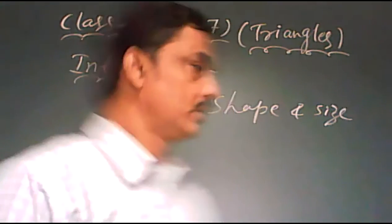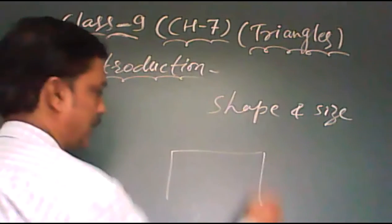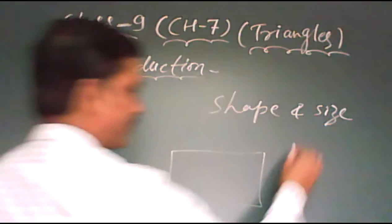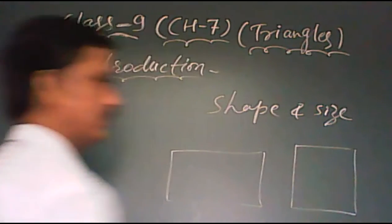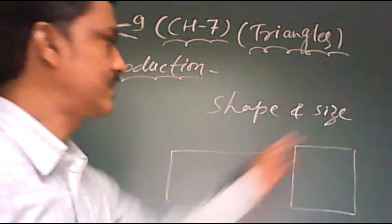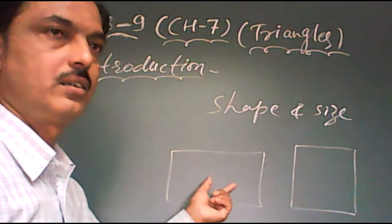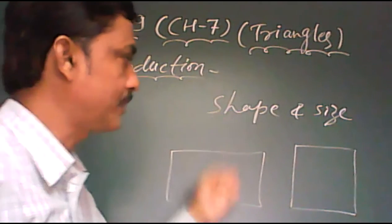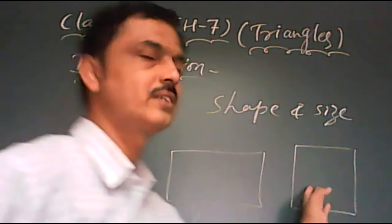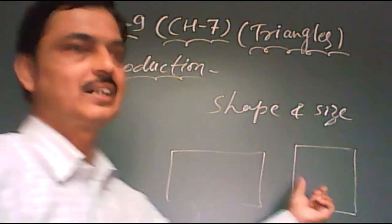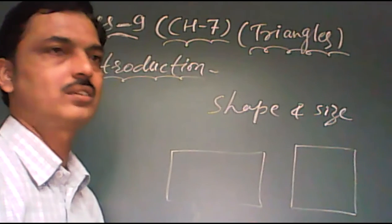If two shapes, one is rectangle and one is square, size is not considered here, but the shape is different. One is rectangle and one is square. So here, these two figures are not congruent.